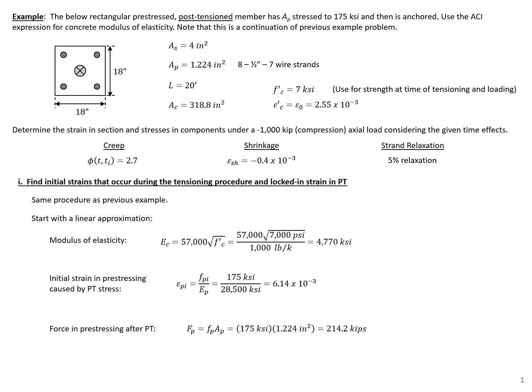This example problem is a continuation of a previous example problem, so I'm going to be briefer in some steps. We're looking at a rectangular prestressed post-tensioned member with a given area of steel, area of prestressing, length, area of concrete, and 7 KSI concrete strength. In this example, we'll determine the strain and stresses under a 1,000 kip compression load, this time also considering given time effects.